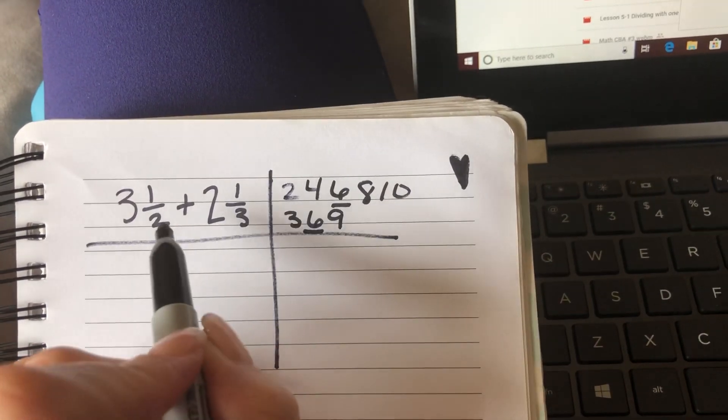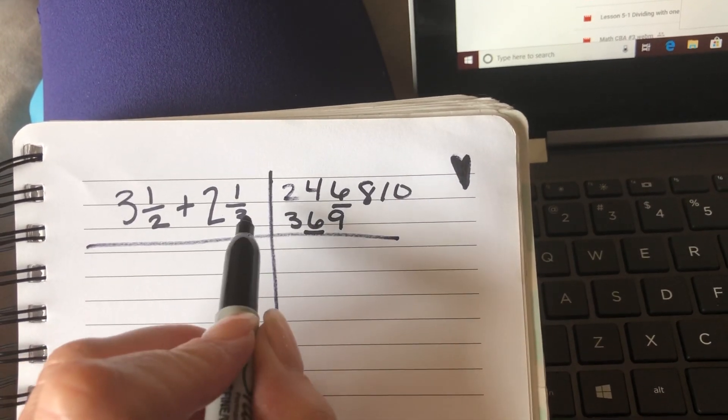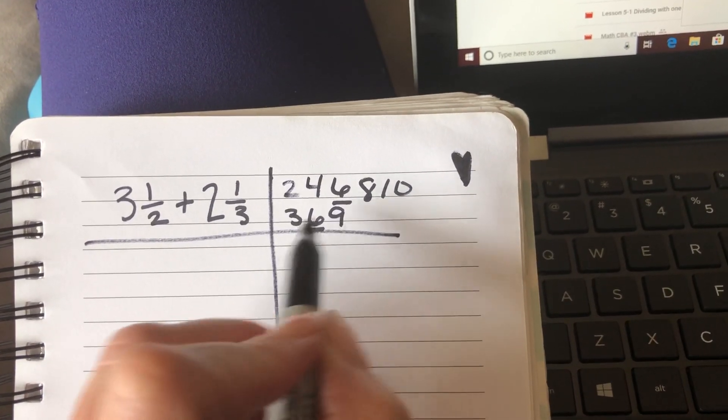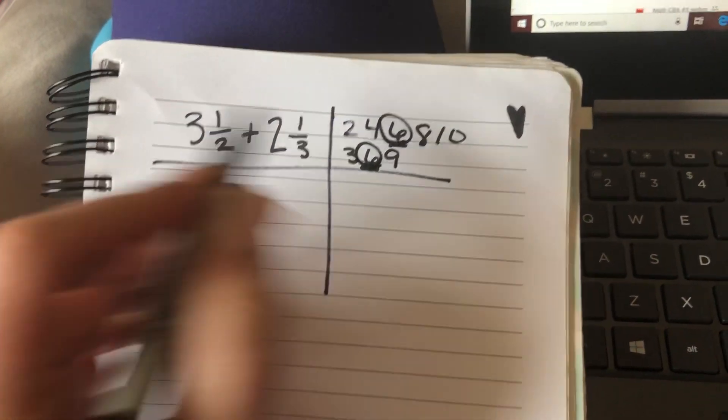So here, halves, so multiples of 2, I find 2, 4, 6, 8, 10, multiples of 3: 3, 6, 9, 12. Oh, there's 6. So I'm going to go ahead and find 6 as my common denominator.